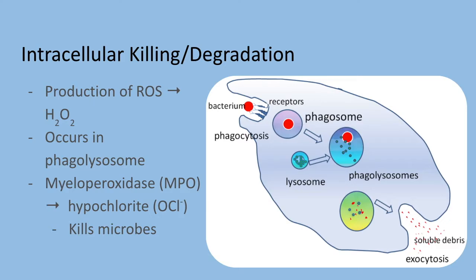Now once we've engulfed a pathogen — in this case a microbe — how does your cell actually go about killing it? Killing mechanisms are normally sequestered or kept locked away in lysosomes, and then the phagocytosed materials are brought there. The first step is the production of reactive oxygen species (ROS) and reactive nitrogen species (RNS).